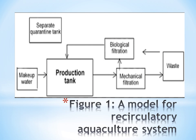Figure 1 here tells us about production in a recirculatory aquaculture system. This is a model recirculatory aquaculture system. From the production tank, the wastewater moves into a mechanical filtration section where the solid particles are removed, before it is sent to the biological filtration section where microorganisms are processed. After which the purified water — both physically and biologically — gets back into the production tank. The waste product is collected into another chamber, while a make-up water chamber tops up the water whenever there are shortfalls.